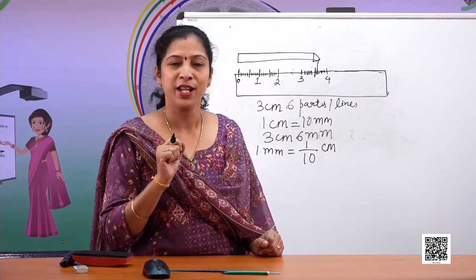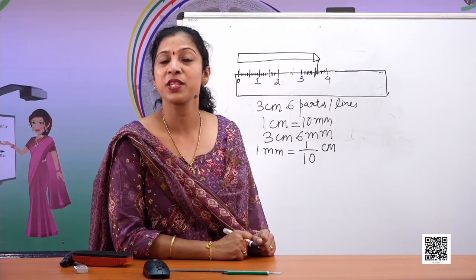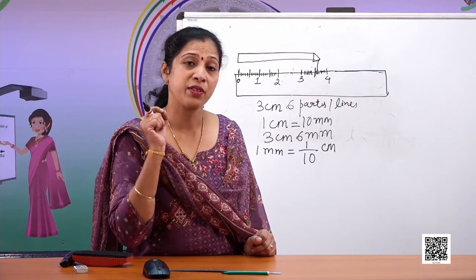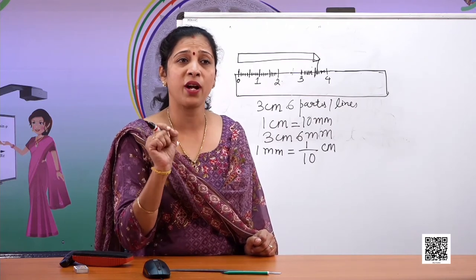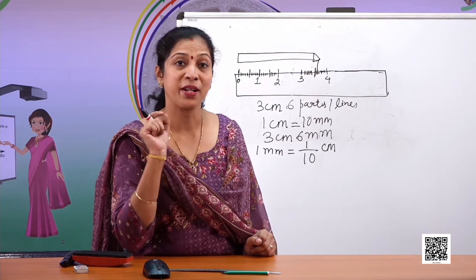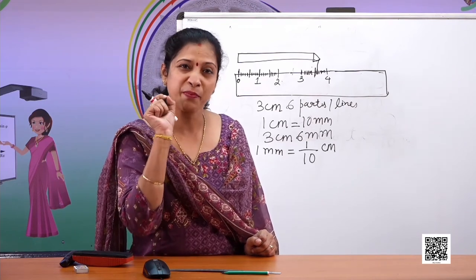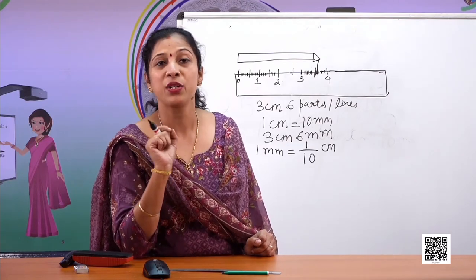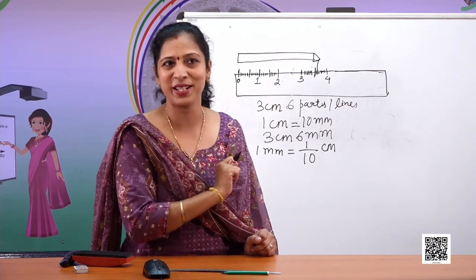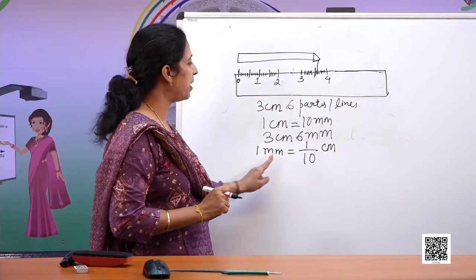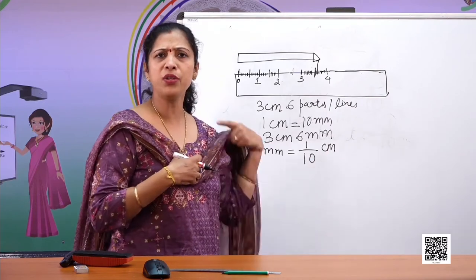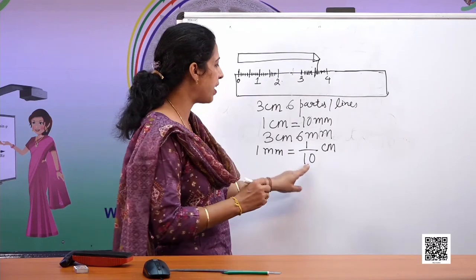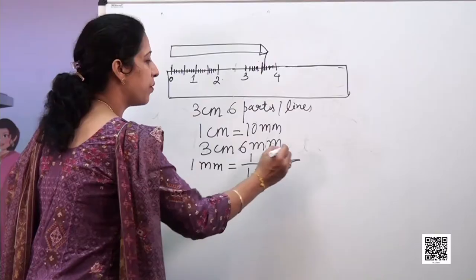One millimeter equals one tenth of a centimeter. Now you understand what the use of tenth is! You must be wondering — millimeter is so small, what is the point of measuring this? But in sports events like the Olympics — running races, swimming races — even fractions of a second matter. So it is very important for us to understand the value of this small quantity.